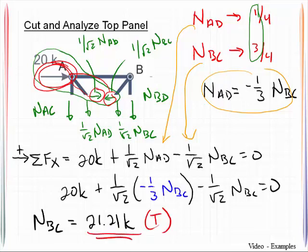And then using our relationship NAD we can solve for that being negative 7.07 kips. It being negative tells me that that bar force is in compression.